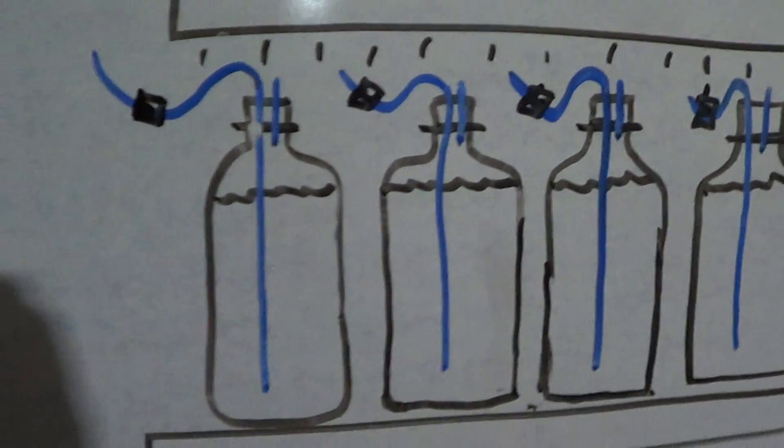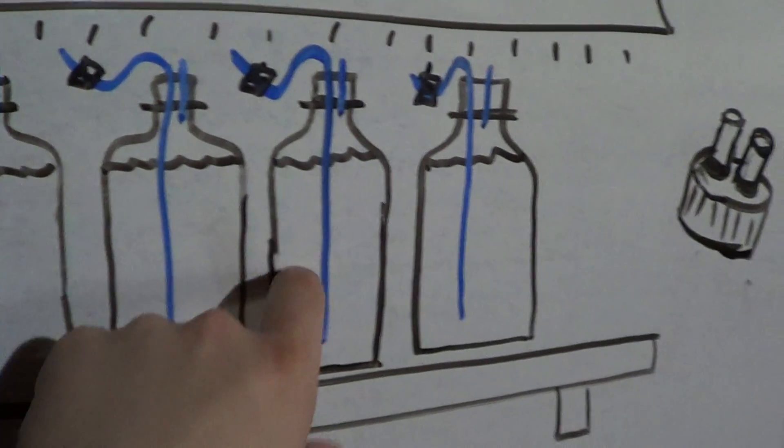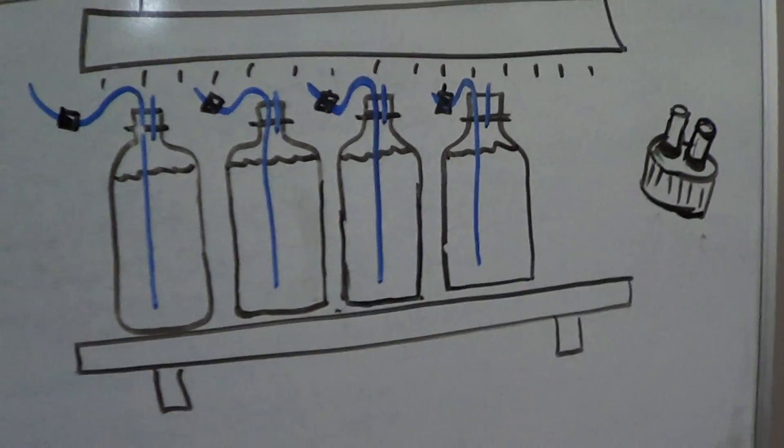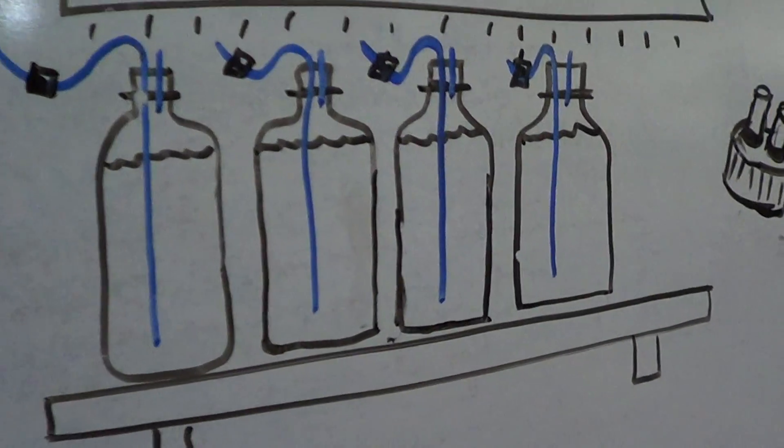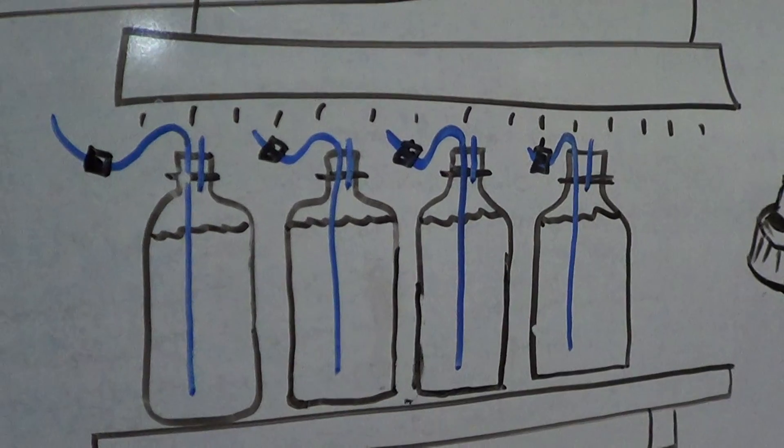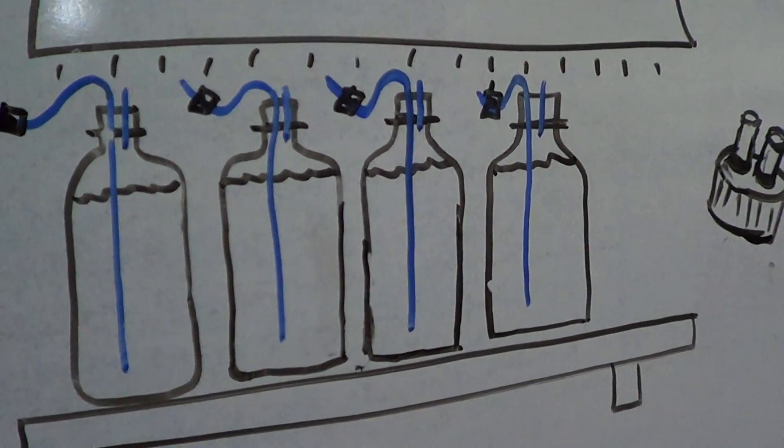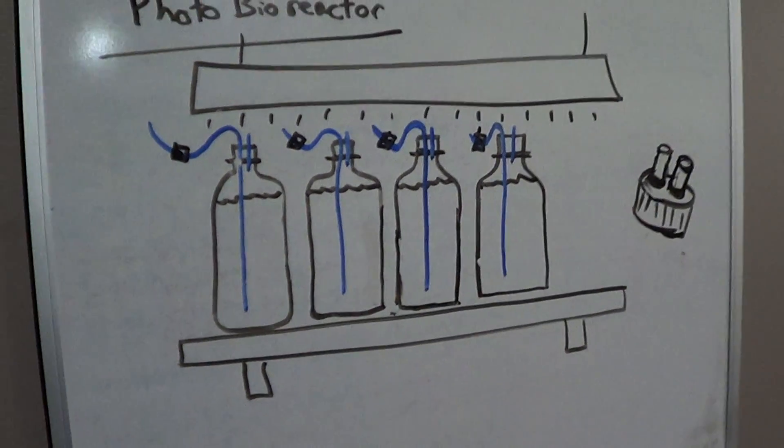This is what it's going to look like. I'm going to start with four bottles, one for each species of algae. And from there, I might get two bottles for each species, so eight bottles total. And after that, if I need to expand further, I might move on to five-gallon carboys or something